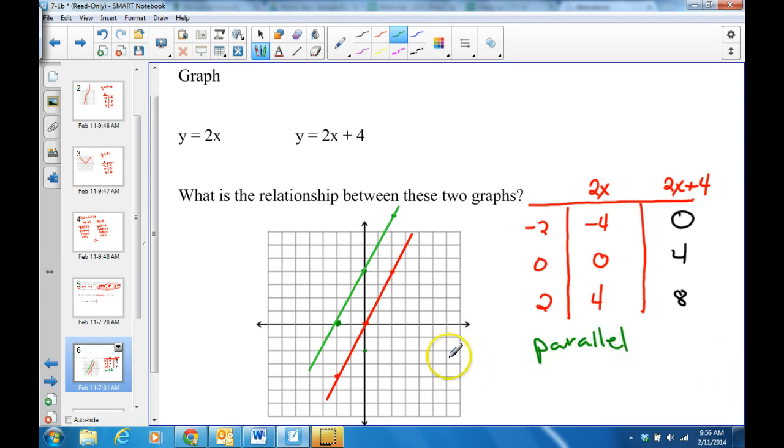And you could also say the green line is the same as the red line, it's just raised by how much? How much did it go upwards? Four. So green really equals red plus four, right? So those are some things you could say about it.